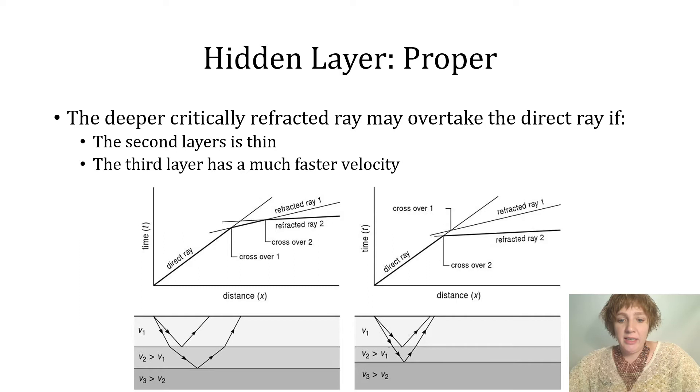The deeper critically refracted ray is going to be able to overtake the direct ray before the intermediate critically refracted ray under two conditions. One is that the second layer is just too thin, and the other condition is that the third layer has a much faster velocity than the second layer.